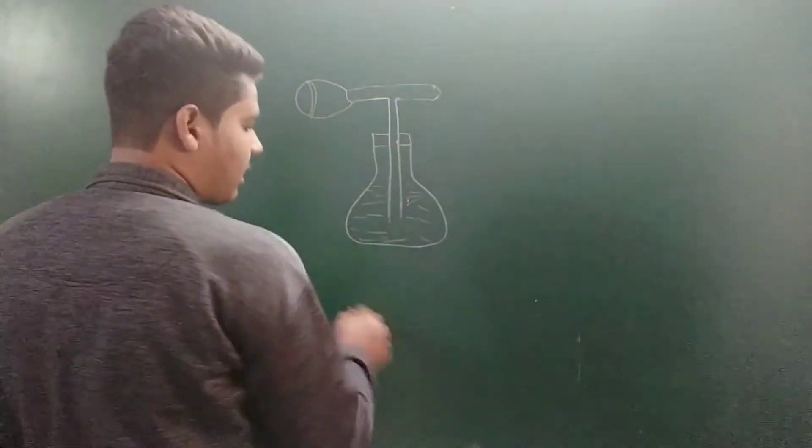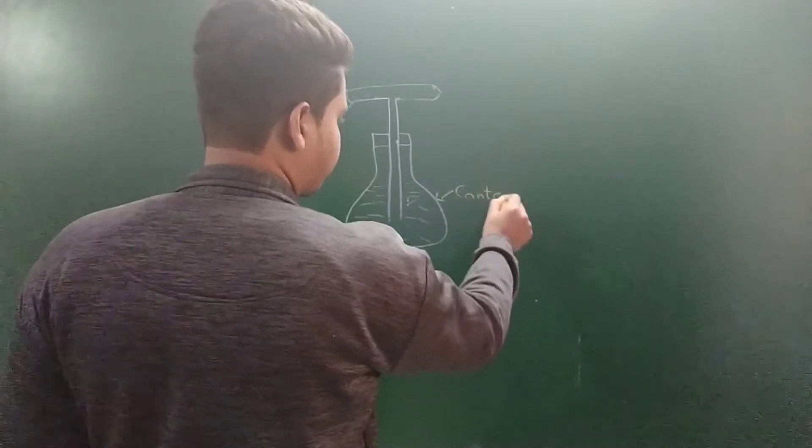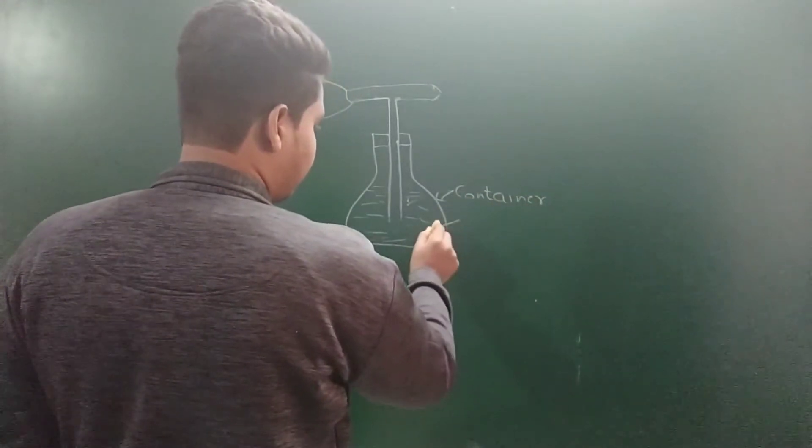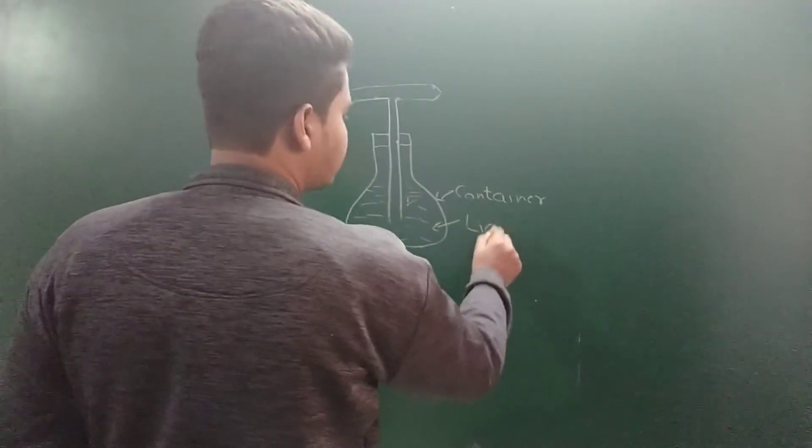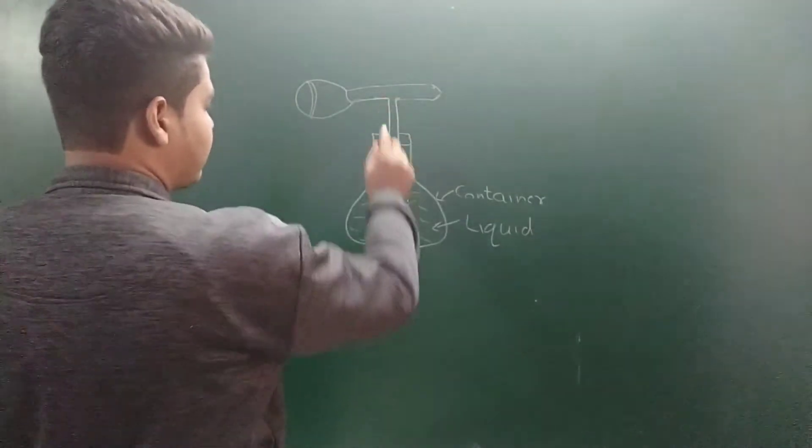Inside the container, suppose it's filled with a liquid. And this is the stem which connects us to this hole through which the liquid has to be sprayed out. So I'll call this the stem.